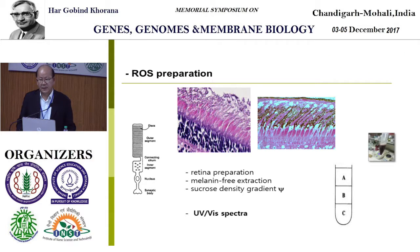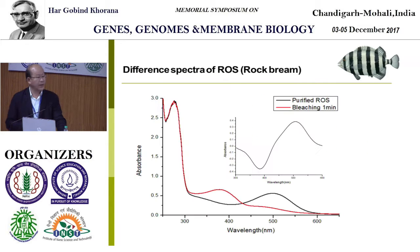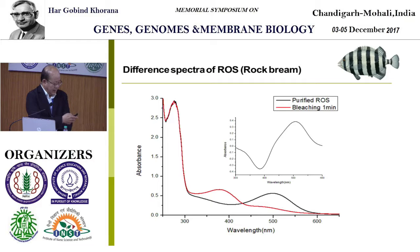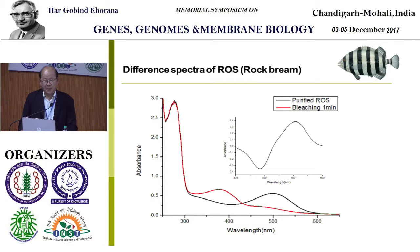We also checked the spectral characteristics of fish by rod outer segment (ROS) preparation. Before that, we verified rod cells and cone cells by histological analysis, then isolated the ROS. The spectra taken in the dark and after light activation show the absorption maxima around 500 nanometers, confirming the absorption maxima of rock bream ROS at around 500 nanometers.